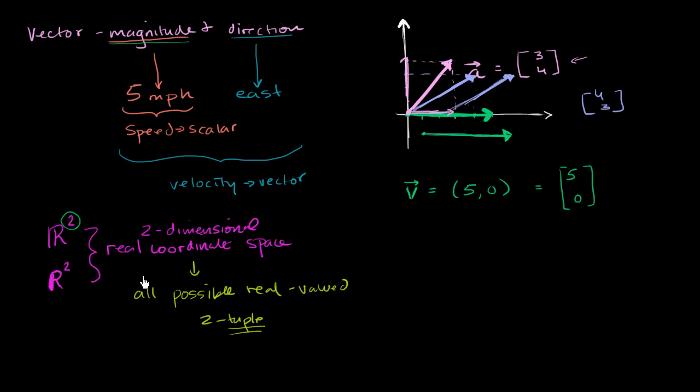So when we're talking about R², we're talking about all of the possible real value two-tuples. So all of the possible vectors that you can have where each of its components, and the components are these numbers right over here, where each of its components are a real number. So you might have (3, 4). You could have (-3, -4).